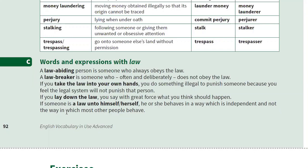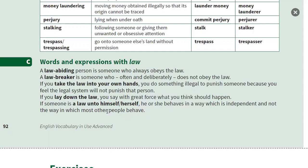The last expression: if someone is 'a law unto himself or herself,' he or she behaves in a way which is independent and not the way in which most other people behave. Most people would obey the law, but that person feels it is their choice not to — so we say he or she is a law unto himself or herself.